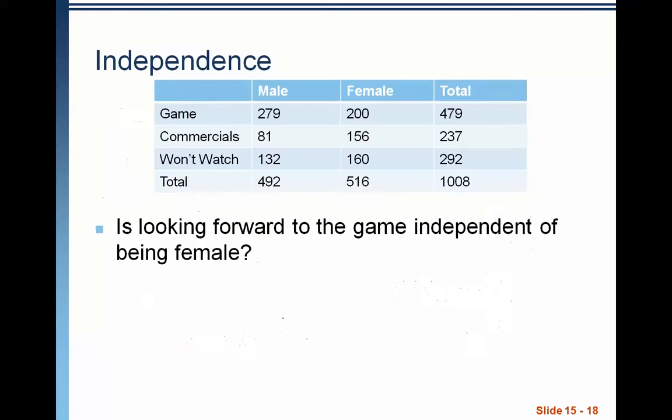Let's look at another example, this time going back to the Super Bowl example that we had. So is looking forward to the game independent of being female? So what we're looking for here, if we're trying to determine independence, is does P of game given female equal P of game? Because what we're saying is, does the probability of the game change given that we know that somebody is female?